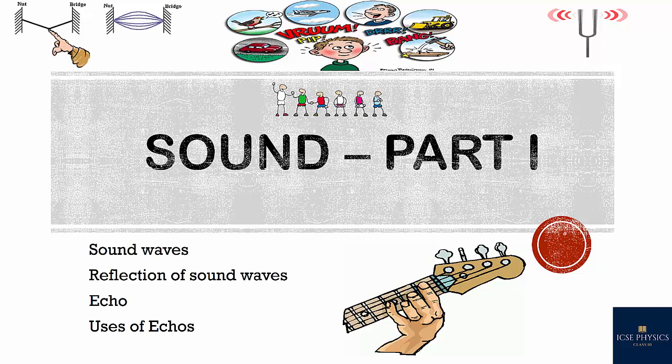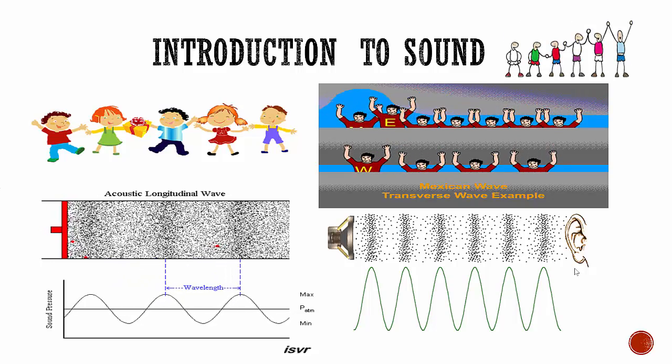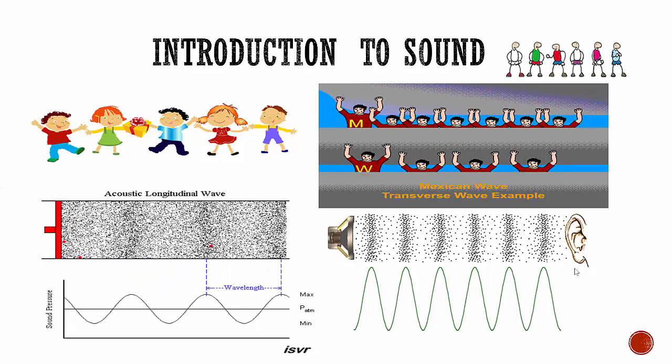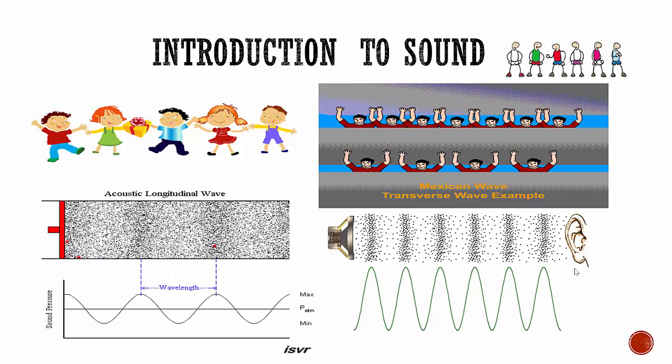Sound is an invisible form of energy. Sounds are made by vibrations. Some sounds are easy to see. For example, if you stretch out and twang a rubber band, you can see it moving back and forth.